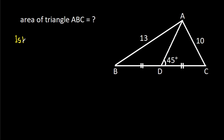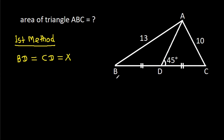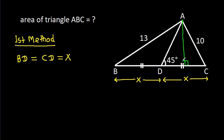So the first method: we have BD is equal to CD. Suppose X, so BD is X and CD is X. And now, from point A, if we draw A perpendicular on BC, suppose this point is E.